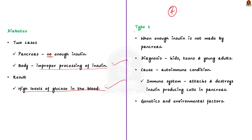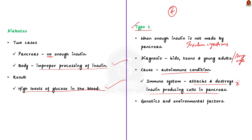Type 1 diabetes occurs when the pancreas doesn't make enough insulin, meaning one has to take insulin every day. It is usually diagnosed in kids, teens, and young adults, but note that it can happen at any age. It is caused by an autoimmune condition where the immune system attacks and destroys the insulin-producing cells in the pancreas. Other factors include genetics and environmental factors; a viral infection can also trigger type 1 diabetes. If a prelims question states type 1 diabetes happens only in young adults, that statement is wrong.